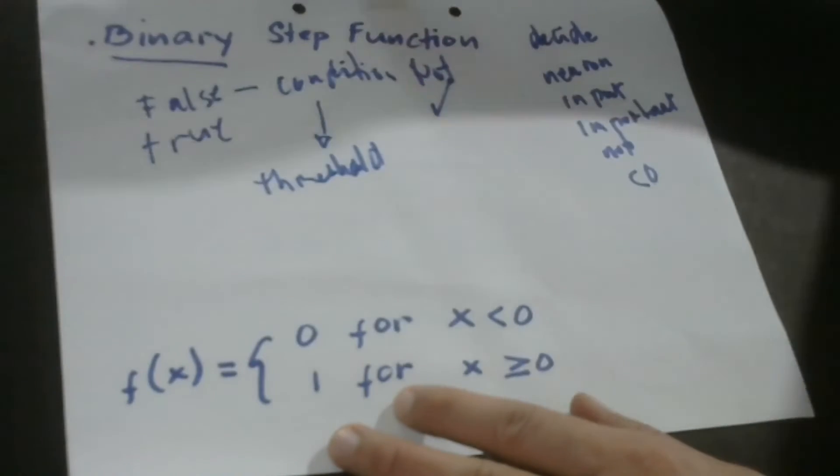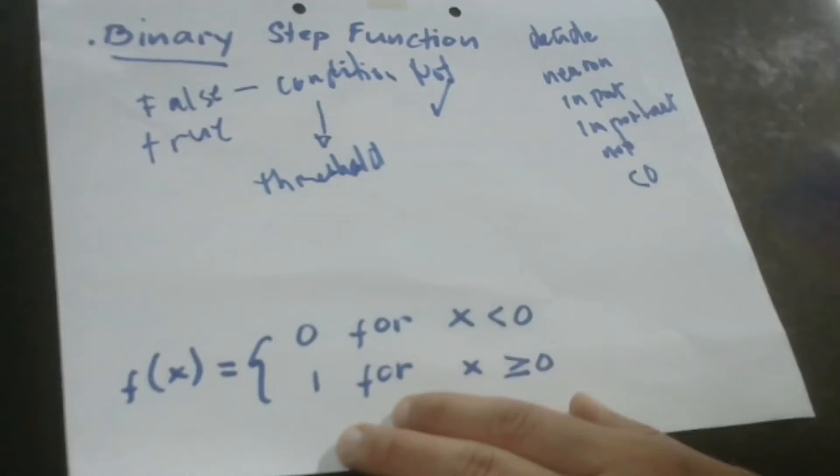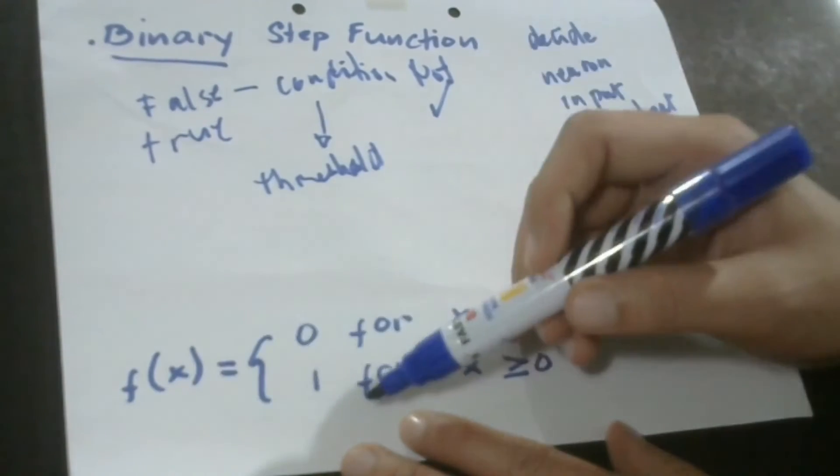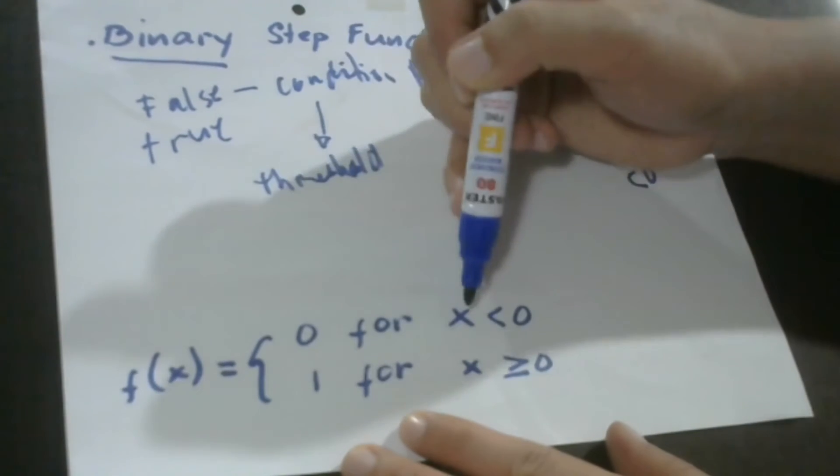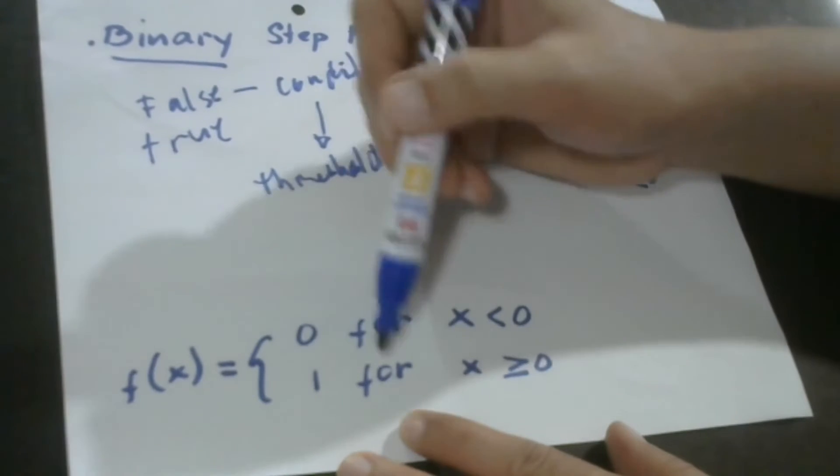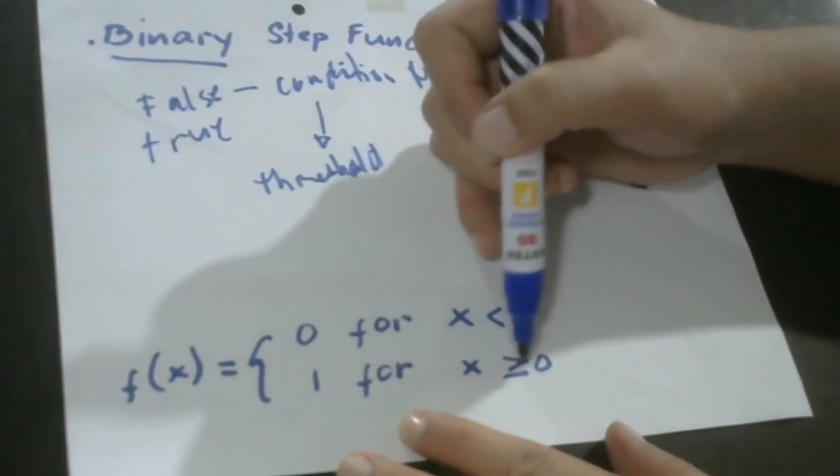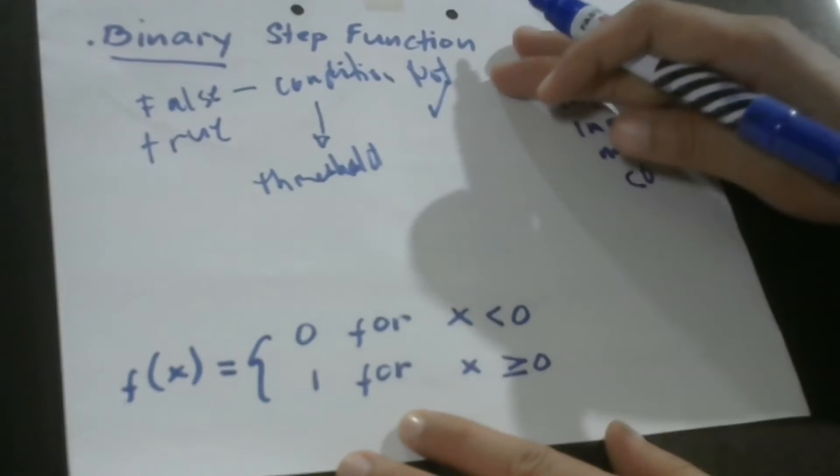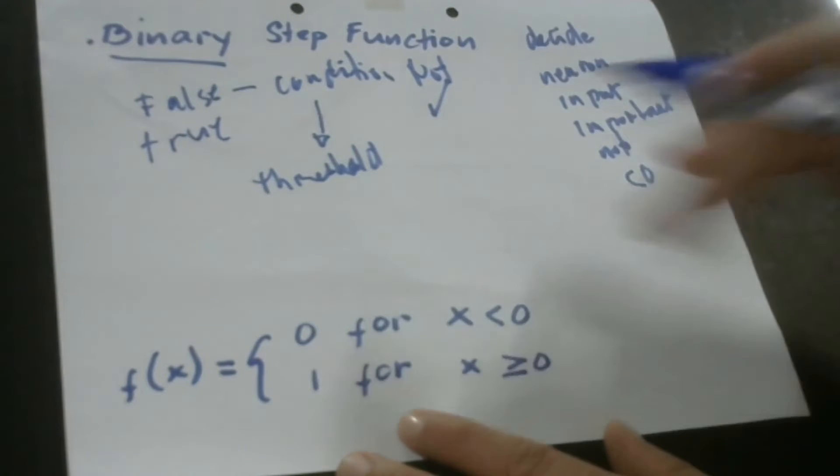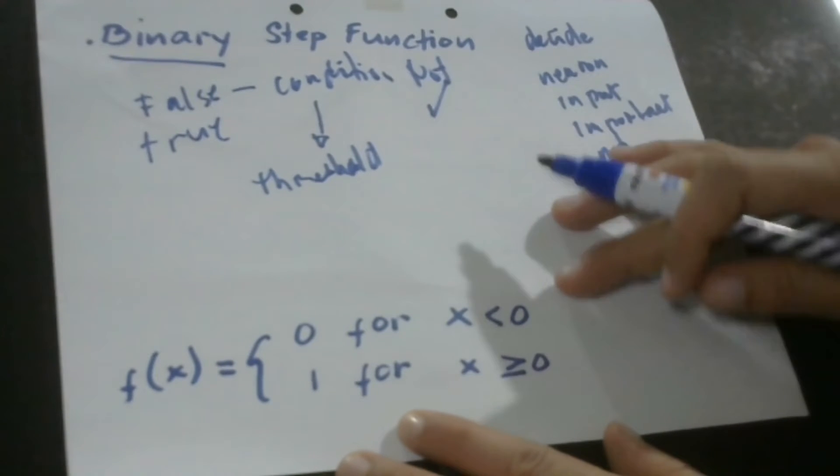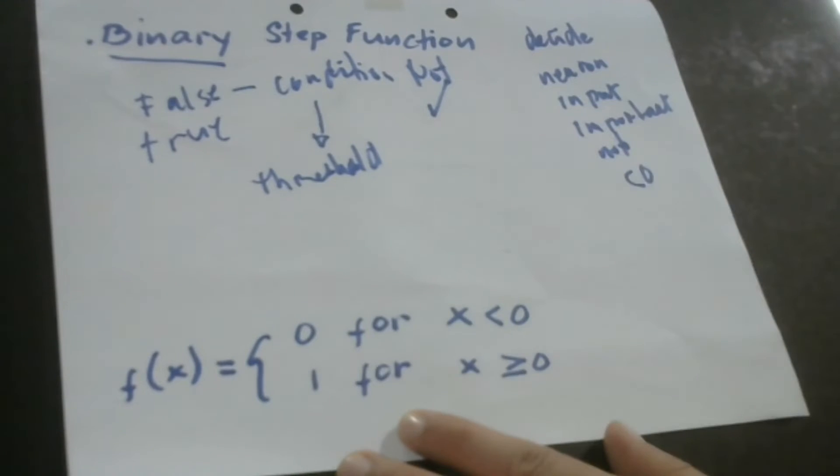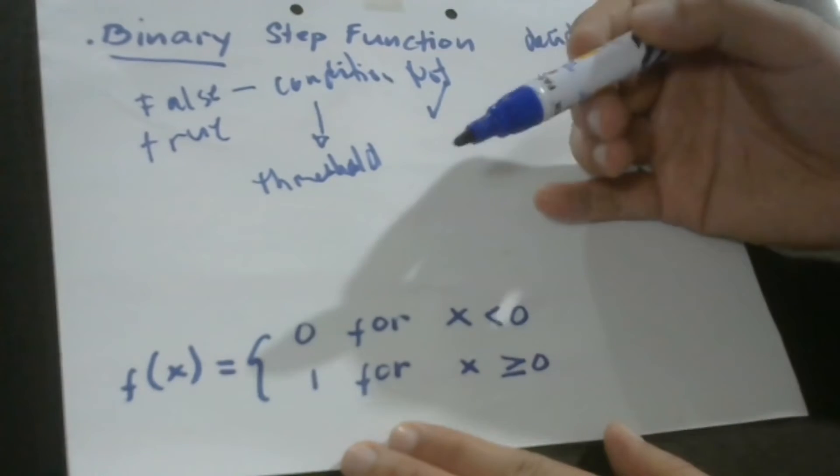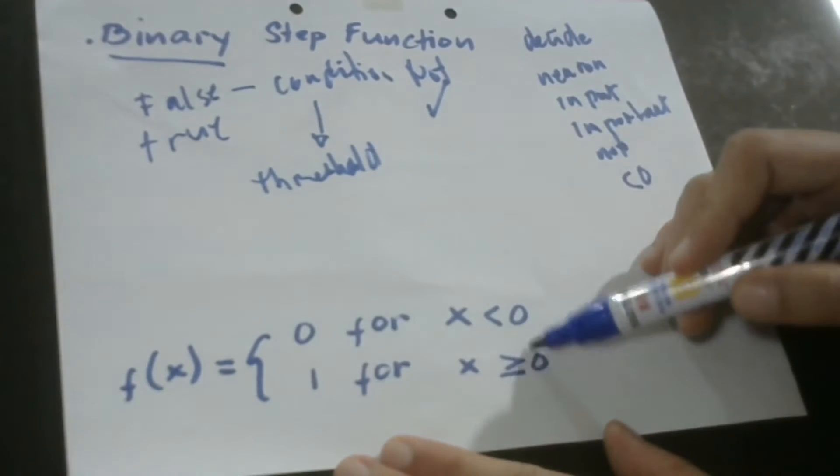So mathematically, how do we express binary step function in numbers or formulas? We have here the function of x is equal to 0 or 1, and 0 for x is less than 0, and 1 for x is equal to or greater than 0. This is just a basic mathematical formula for a binary step function, which means it is 0 or false or null when a particular condition is less than 0, and it is 1 or true or yes when a particular condition is greater than or equal to 0.